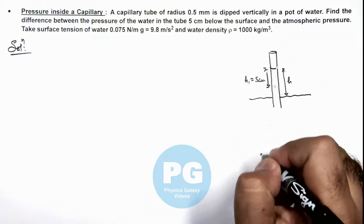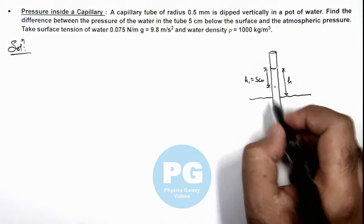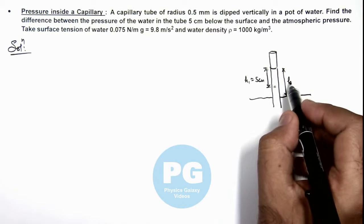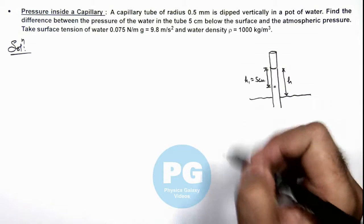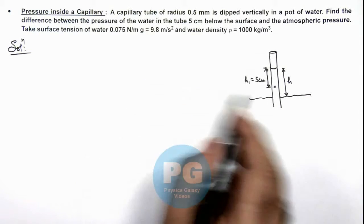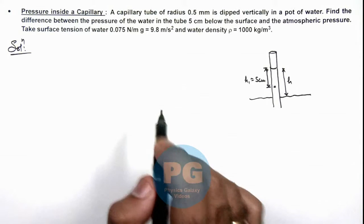So in this situation, this point may be above or below the meniscus, it can be less than h or more than h, but we are least bothered about the value of h. We are required to calculate the pressure difference between this point and the atmospheric pressure.